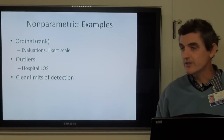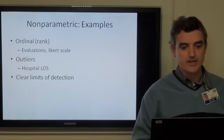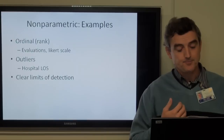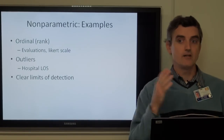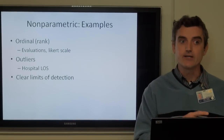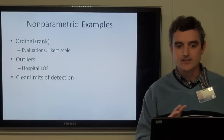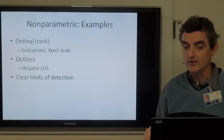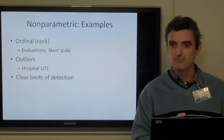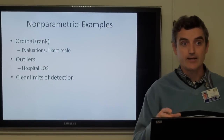Some types of data that are non-parametric include ordinal data. You'll often see that in evaluation-type data distributed on what's called the Likert scale — on a scale of one to five, with one being strongly disagree and five being strongly agree. Often that type of data is pretty highly skewed. Also, when there are a lot of outliers — hospital length of stay is a great example, where most patients are discharged within a day but a few stay for weeks or even months and that skews the data. Or when there are clear limits of detection in certain diagnostic tests.